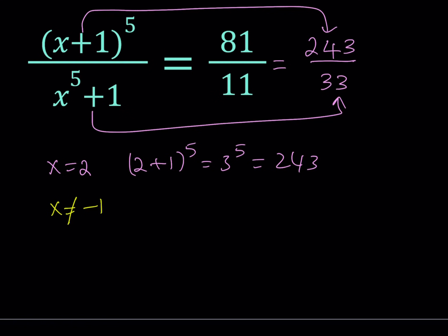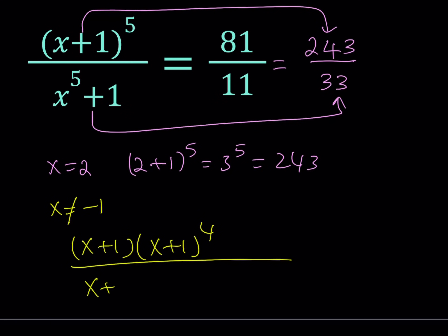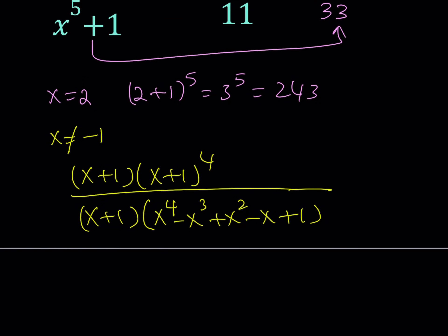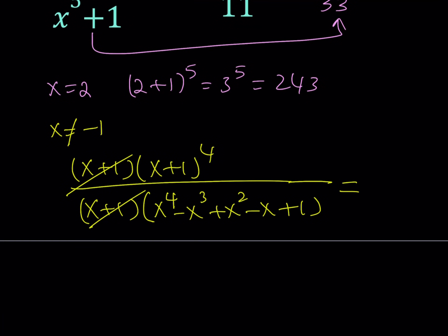So let's go ahead and factor the top and the bottom. That's going to give me x plus 1 multiplied by x plus 1 to the 4th power, and for the bottom, if I take out an x plus 1 — remember factoring a^n plus b^n when n is odd — it's going to be x to the 4th minus x cubed plus x squared minus x plus 1. The terms alternate because the first factor is positive. So these two cancel out, and this is equal to 81 over 11.